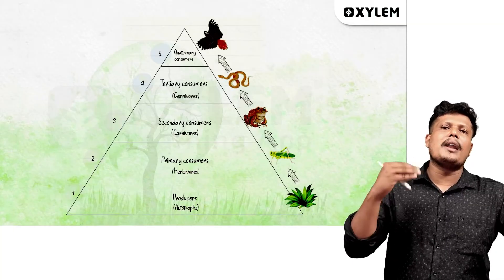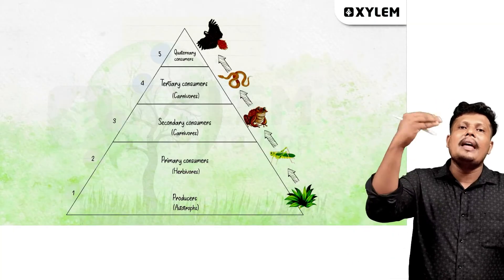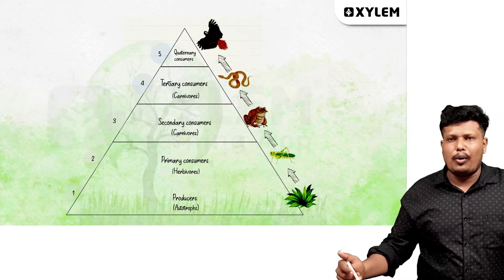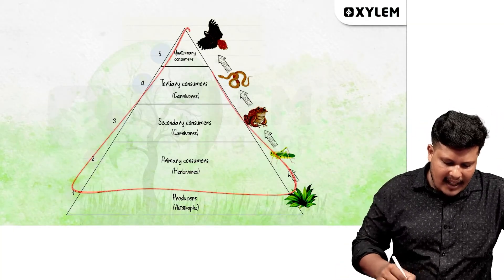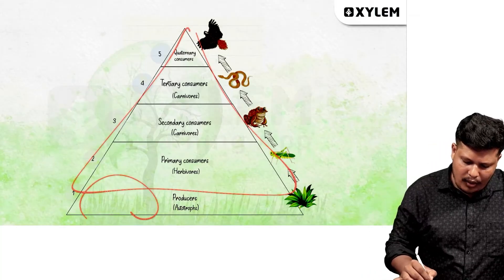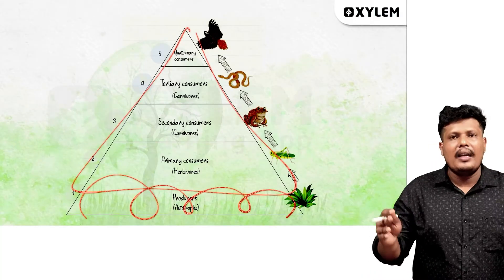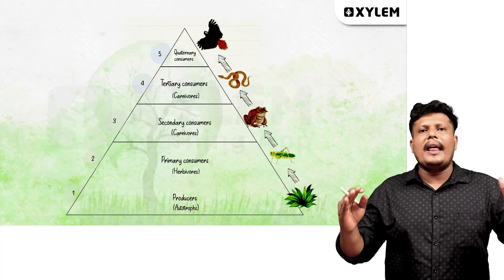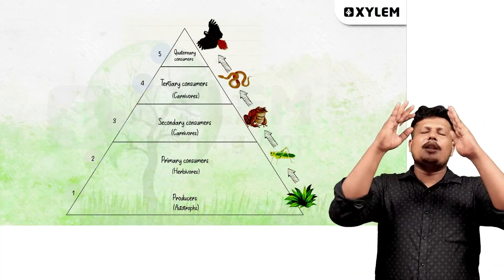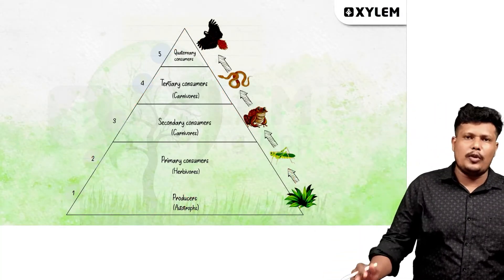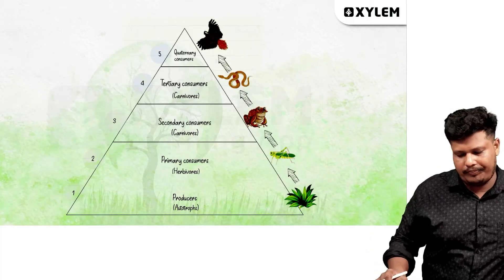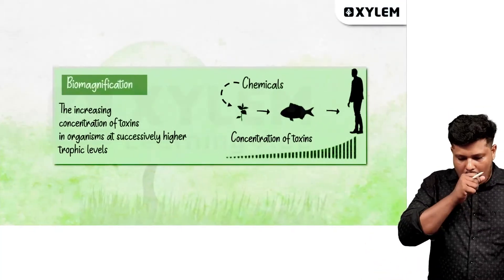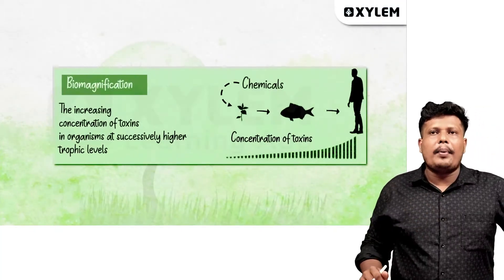Only 10% of the energy gets transferred from one trophic level to another. It is possible to build up a pyramid and form it.